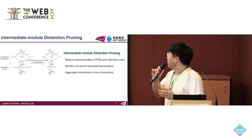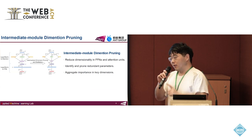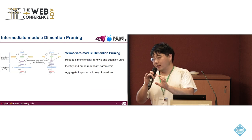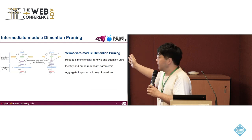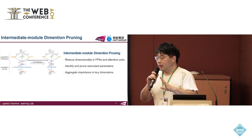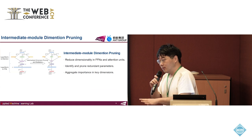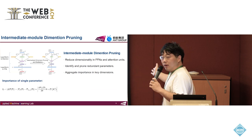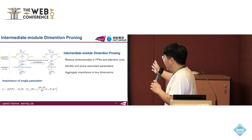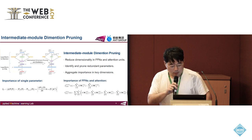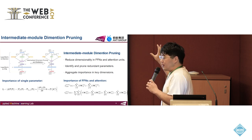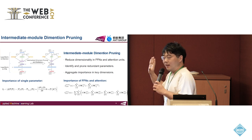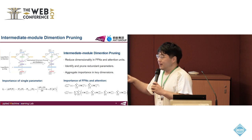The second stage is intermediate module dimension pruning. In each block, we have a feed-forward neural network and an attention unit. We prune the hidden dimensions here. Removing hidden dimensions is different from removing blocks. To determine what to prune, we calculate importance scores using first-order derivatives. For each dimension, we sum the importance of its corresponding parameters and remove the least important dimensions.